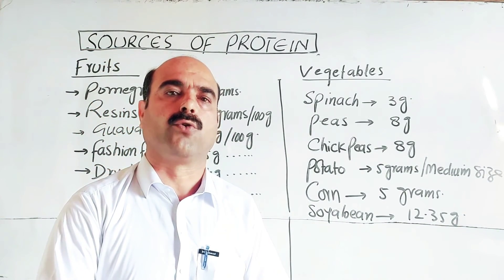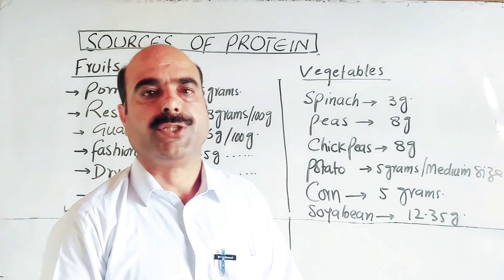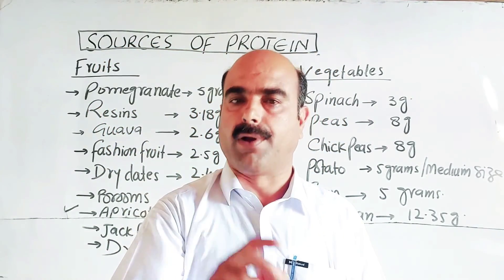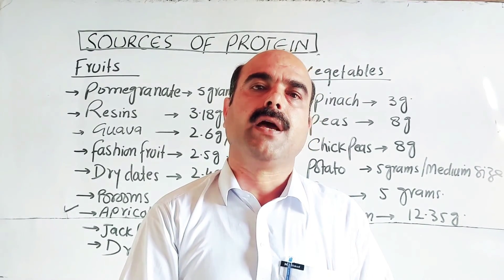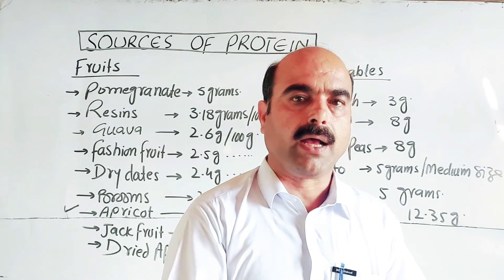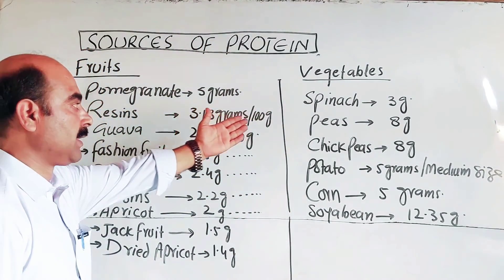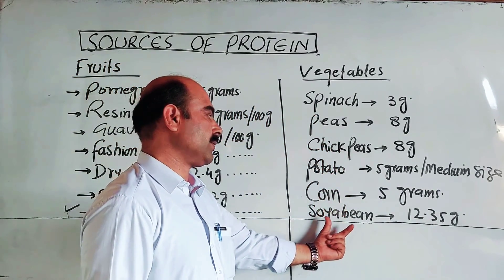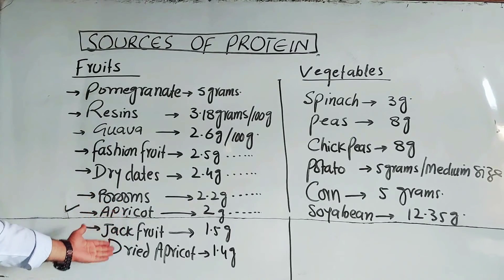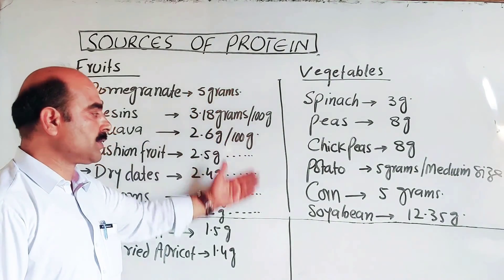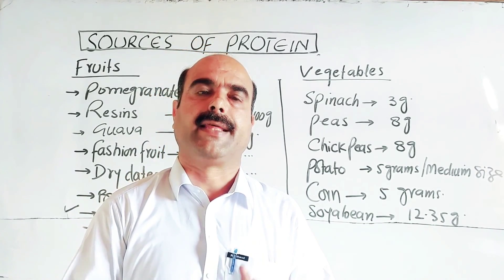Students, this was the complete table of protein sources. There are two main sources of proteins: animal sources and plant sources. From animal sources we get proteins from eggs, fish, milk, beef, chicken, yogurt and cheese. From plant sources, proteins come from seeds, fruits and vegetables - for example spinach, peas, chickpeas, potato, corn and soybean. Fruits include pomegranate, guava, passion fruit, dry dates, prunes, apricot, jackfruit and dried apricot. Thanks a lot for watching the video.